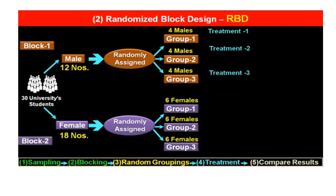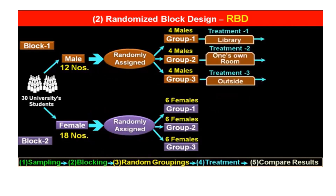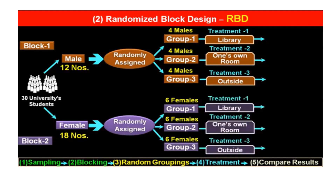Now the treatments are applied. Treatment one means group one will study in the library, group two will study in their own room, and group three will study outside. In the same way, in both the male and female groups: female group one will study in the library, group two will study in their own room, and group three will study outside.